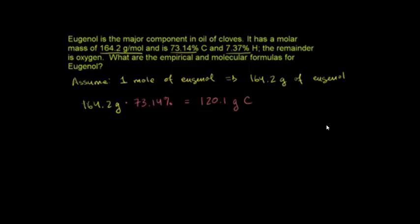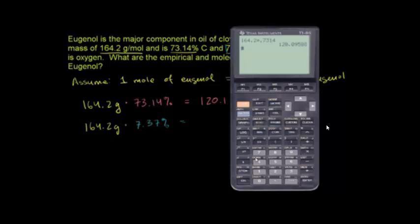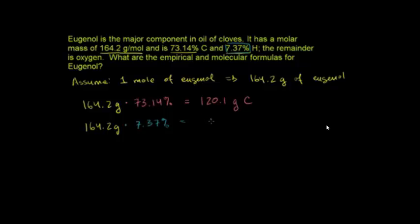Now let's do the same thing for hydrogen and oxygen. We have 164.2 grams of Eugenol times 7.37% (which is 0.0737), and we get 12.1 grams of hydrogen. They don't give us explicitly the percent composition of oxygen, but we know everything left over is oxygen.